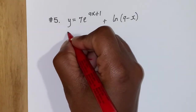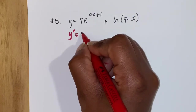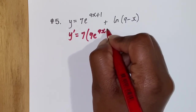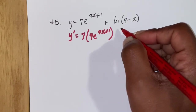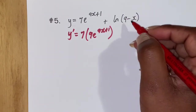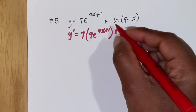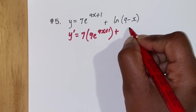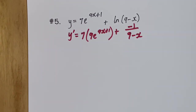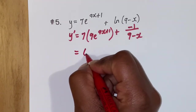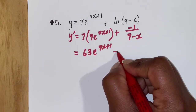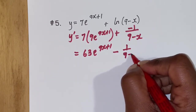Last question: y' = 7e to the (9x + 1) + ln(9 − x). For 7e to the (9x + 1), differentiating gives 9e to the (9x + 1), multiplied by 7, giving 63e to the (9x + 1). For ln(9 − x), which is in the form ln(ax + b) with a = −1, we get −1 over (9 − x). The plus and minus sign become negative, giving minus 1 over (9 − x). Final answer: 63e to the (9x + 1) minus 1 over (9 − x).